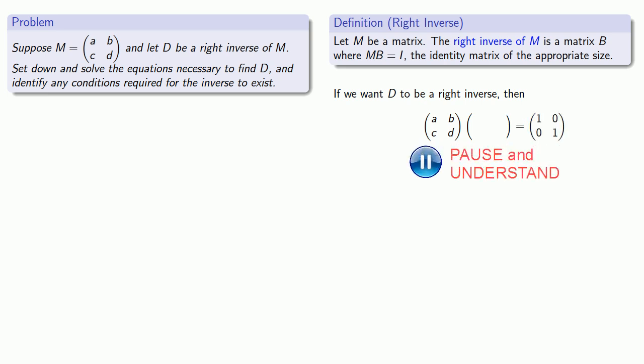And that means the matrix we're multiplying D by has to have two columns. So we have to multiply D by a 2 by 2 matrix. And this has four entries which we don't know, so we'll call them x1 through x4.